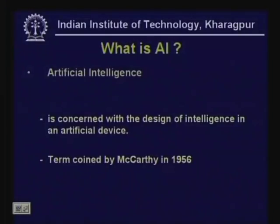What is artificial intelligence? There are many definitions of this term floating around. As is clear from the two words, AI is concerned with the design of intelligence — specifically, intelligence in artificial artifacts and artificial devices, that is, man-made systems and building intelligence into them. This term was coined by McCarthy in 1956 at the famous Dartmouth conference, which we will have occasion to talk about later.